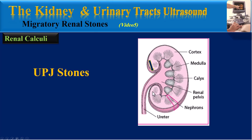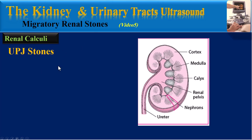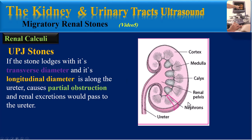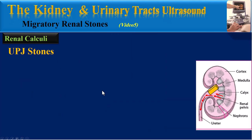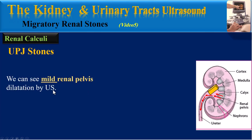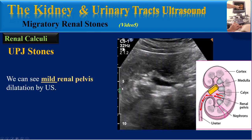First, UPJ stones. If the stone lodges with its transverse diameter across the lumen and its longitudinal diameter is along the ureter, it causes partial obstruction, and renal excretions would pass to the ureter. In this situation, because the obstruction is not complete, the patient does not have much pain and may experience intermittent colic pain.